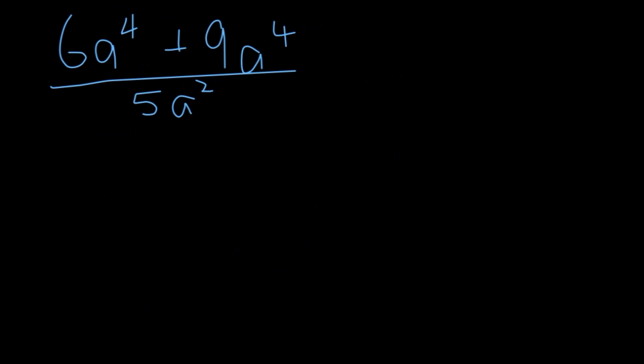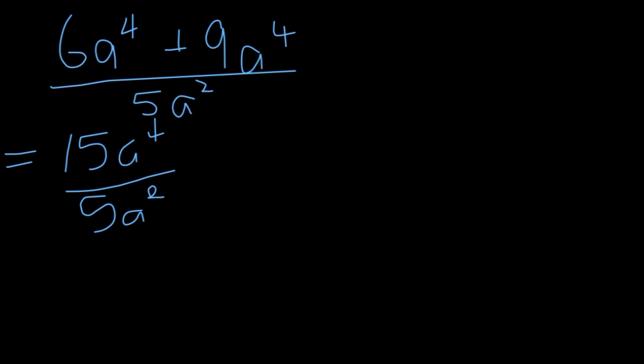Let's say you're given (6a⁴ + 9a⁴) all over 5a². The first thing to do is add up the like terms in the numerator: 6a⁴ plus 9a⁴ gives 15a⁴ over 5a². Now 5 goes into 15 three times, and for a⁴ divided by a², according to the laws of exponents when you divide powers of the same base you subtract the exponents — so a to the power of 4 minus 2 gives a final answer of 3a².